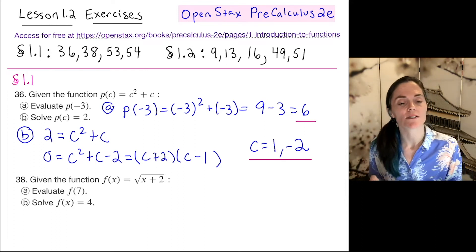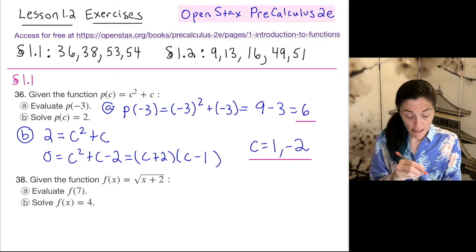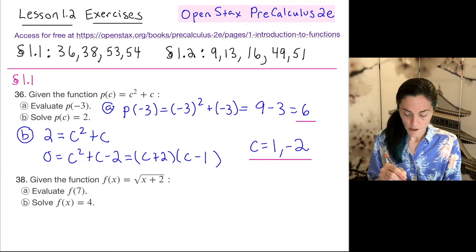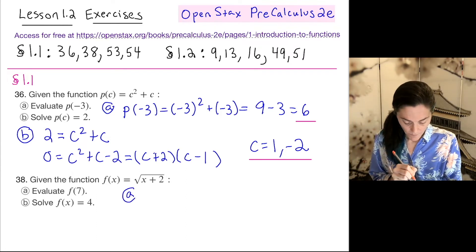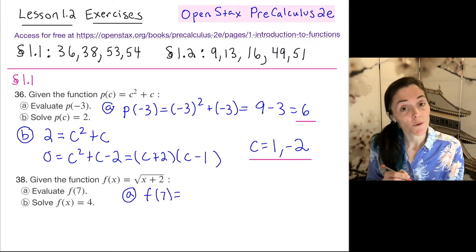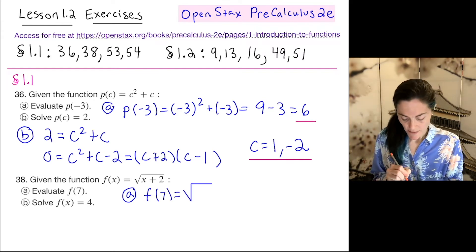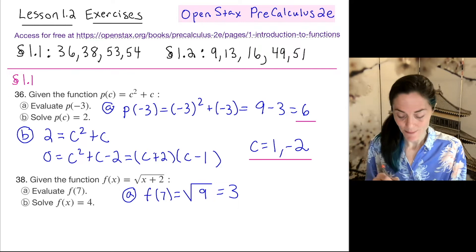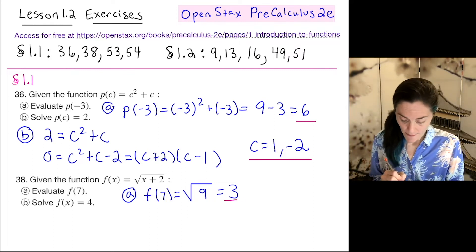Now move on to number 38. It's very similar, we just have a different function. First, we want to evaluate at 7, where our function is the square root of x plus 2. So we have the square root of 7 plus 2, which is 9. Square root of 9 is 3. This was evaluating my function.